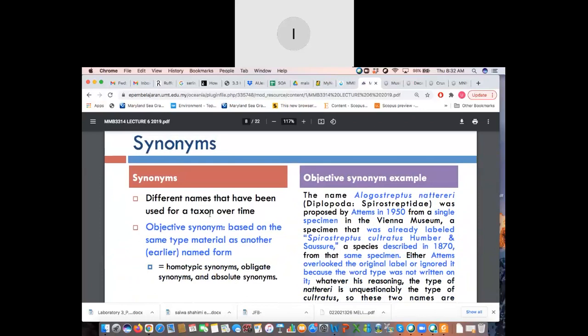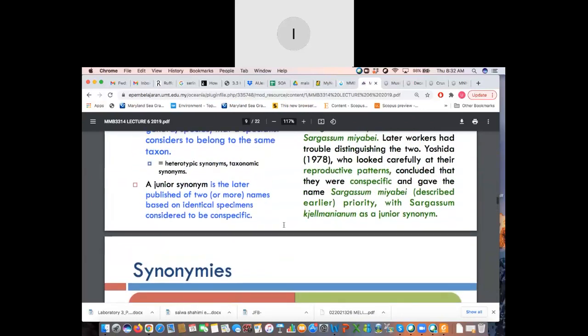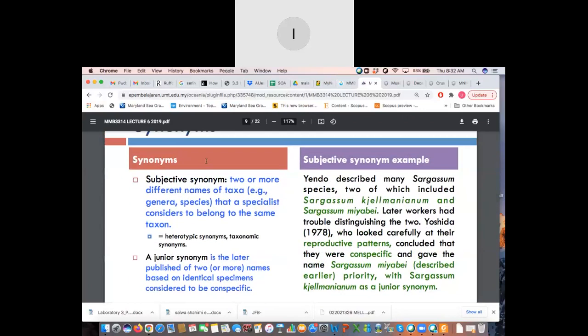Now, for synonyms, the different names that have been used for taxon. I believe I have the list here. I'm coming to that stage later, so just bear with me here. So, synonyms like how you would understand it in thesaurus, it has a list of different names that is understood for one particular word. For example, the word big, what are the other synonyms for big? You have majestic, you have gigantic, you have enormous. So, that's what you mean by that. So, when you mean by a subjective synonym, it's two or more different names of the taxa that especially is considered belong to the same taxon. Other terms that are similar to subjective synonyms are heterotypic synonyms or taxonomic synonyms. A junior synonym is the later published of two or more names based on identical specimens considered to be conspecific. It's the later published names.